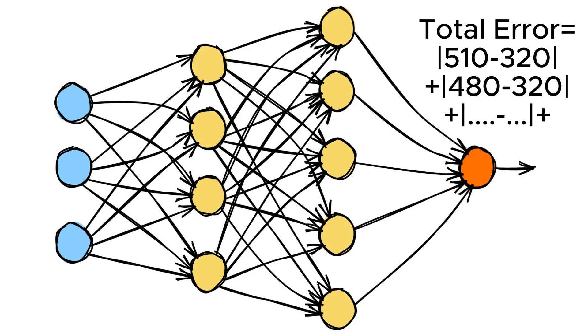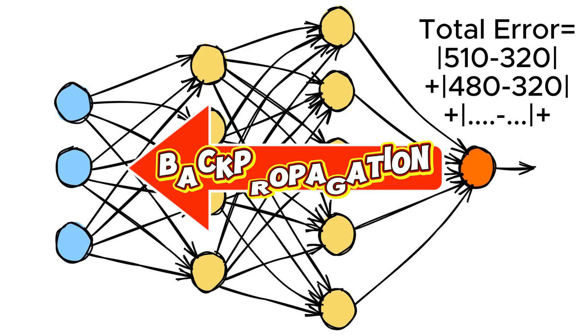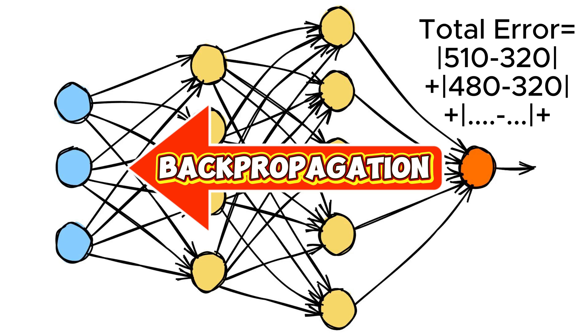Backpropagation uses calculus, specifically partial derivatives, to calculate the necessary adjustments. The backpropagation process occurs from right to the left through the neural network.